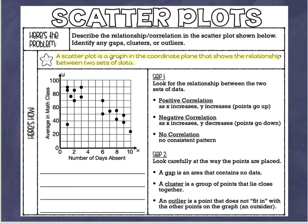We describe scatter plots by their relationship or correlation — those terms mean the same thing. One type is a positive correlation, meaning as the x value increases, so does the y value. Another type is a negative correlation — as the x value increases, the y value decreases. Then there are scatter plots with no correlation, where the points are just random and appear to have nothing in common.